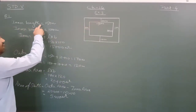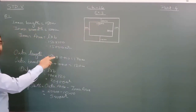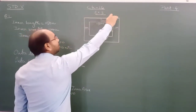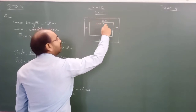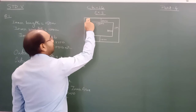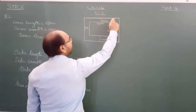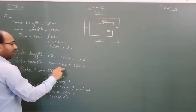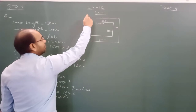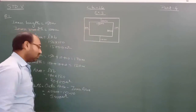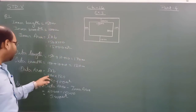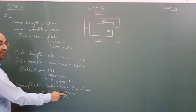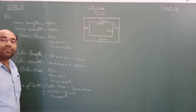Inner area is already known. We formed the path, so 10 meters is added on each side. So outer breadth is 100 plus 10 plus 10 equals 120 meters. The outer area is 170 into 120, which comes to 20,400. From that we subtract the inner area to get the area of path.